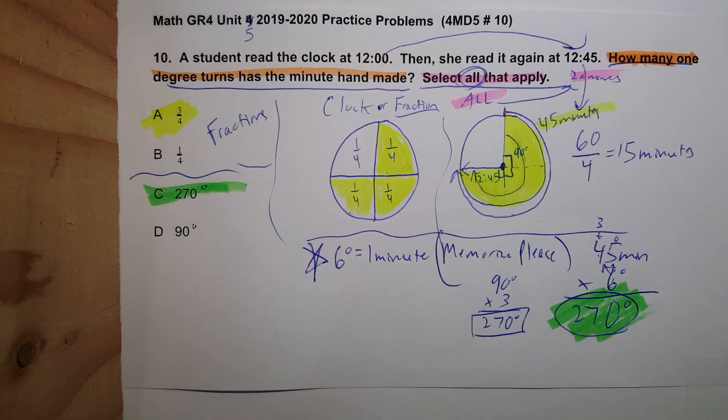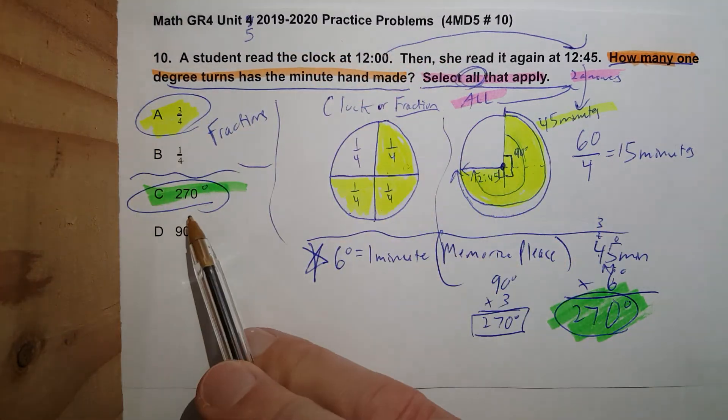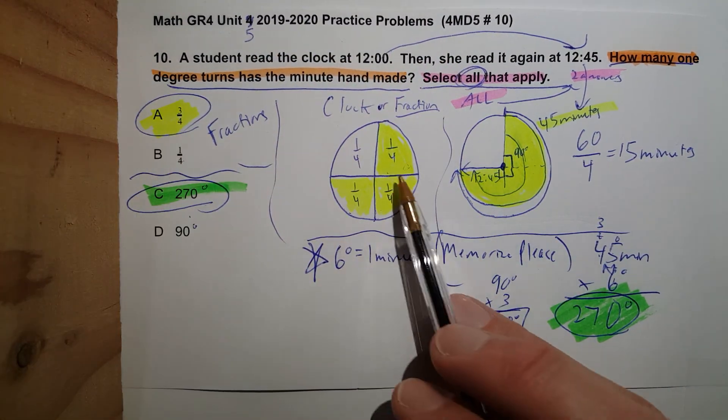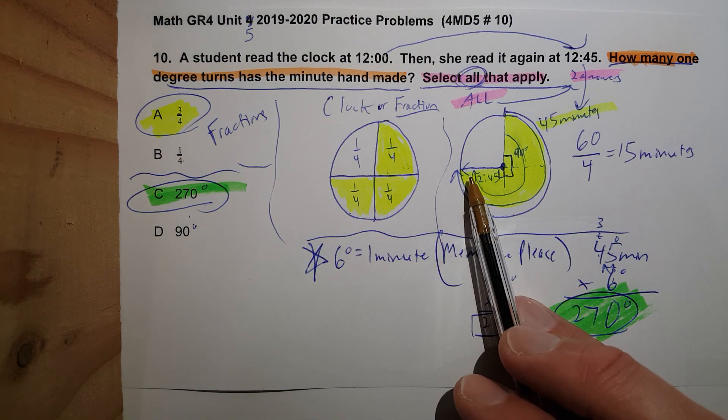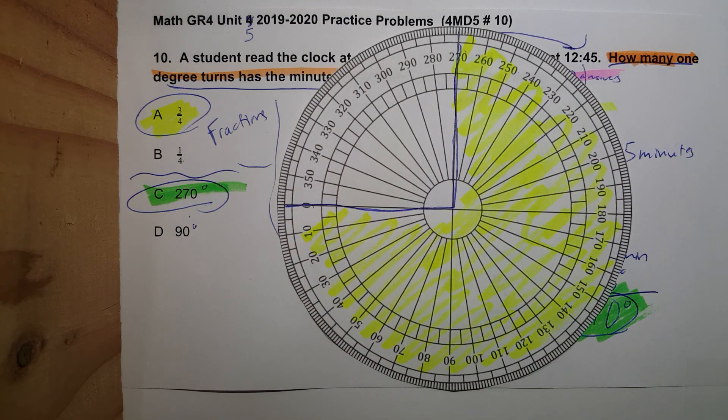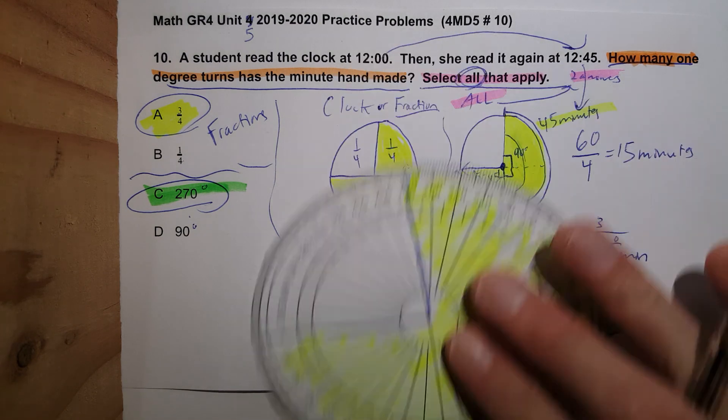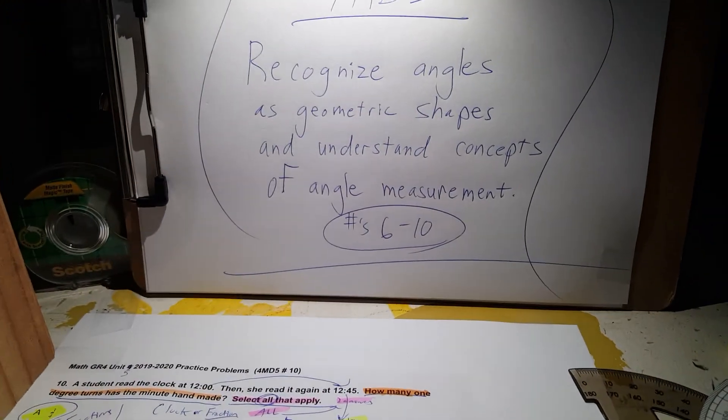So let's summarize: our two answers are 270 degrees and three fourths. Three fourths of the circle is the same as 45 minutes, which is the same as 270 degrees. That's it. Bye bye standard 4MD5, we love you later.